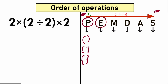The next step is E, which stands for exponent. Don't be scared — this is just basic powers, like 2 to the power of 3, or 5 to the power of 2. We need to raise numbers to their powers. We do this after parentheses. So the second step is to find all powers in the expression and evaluate them.